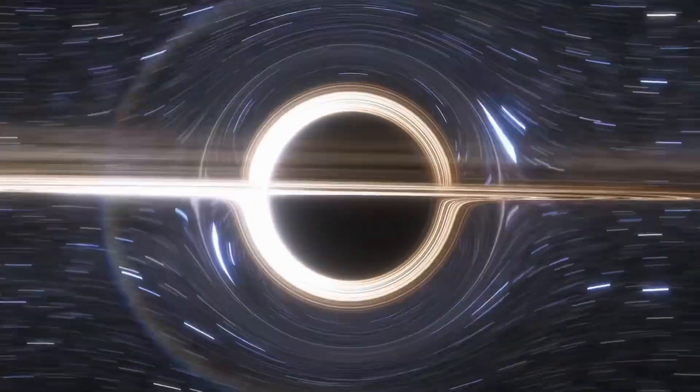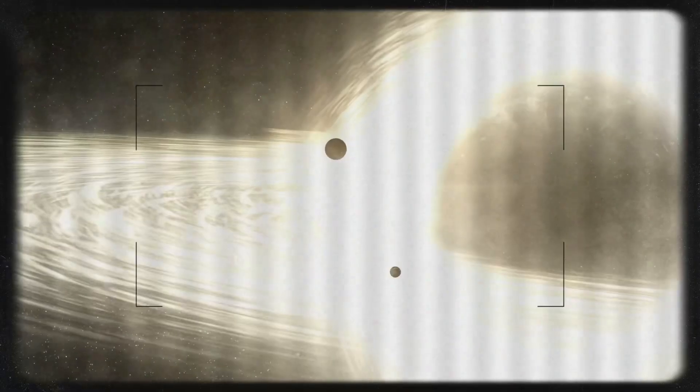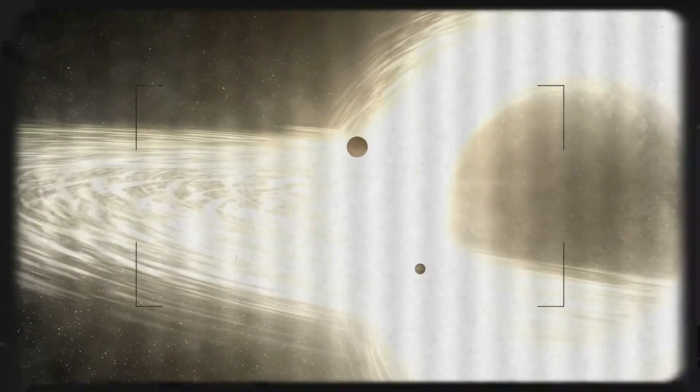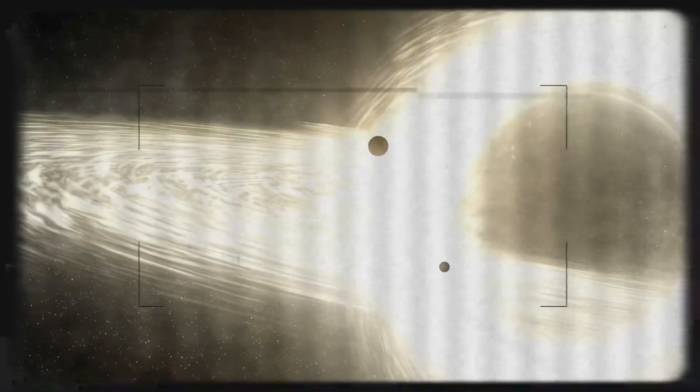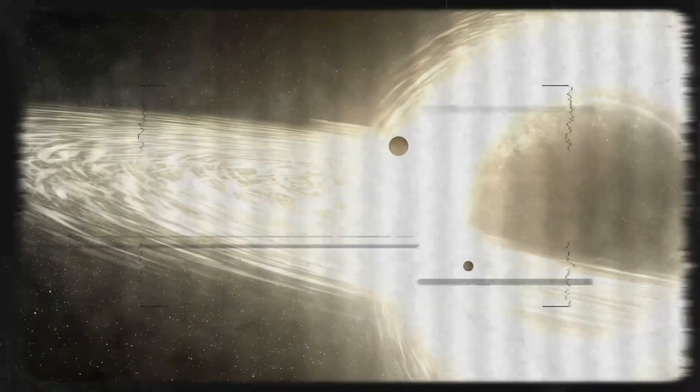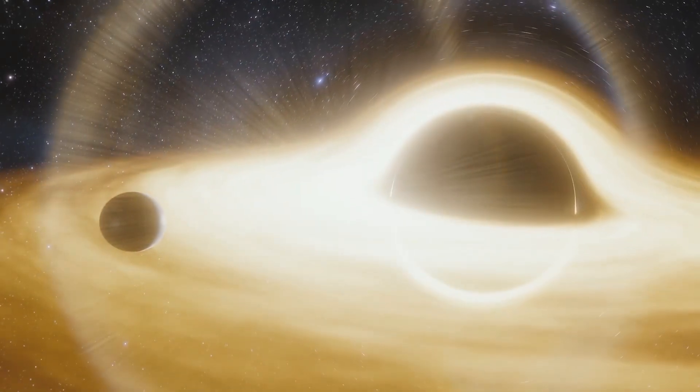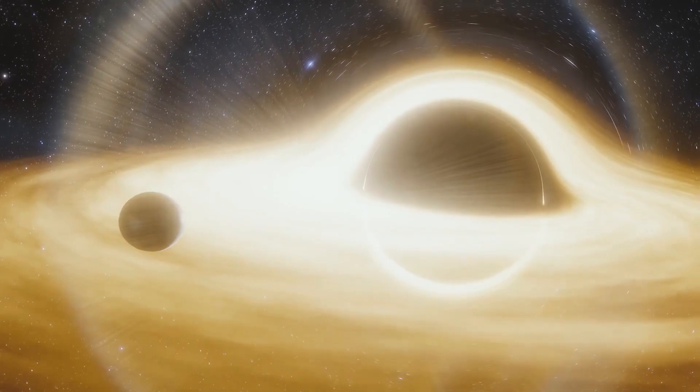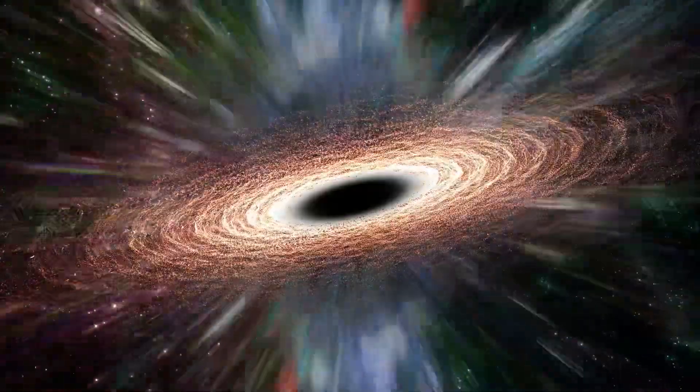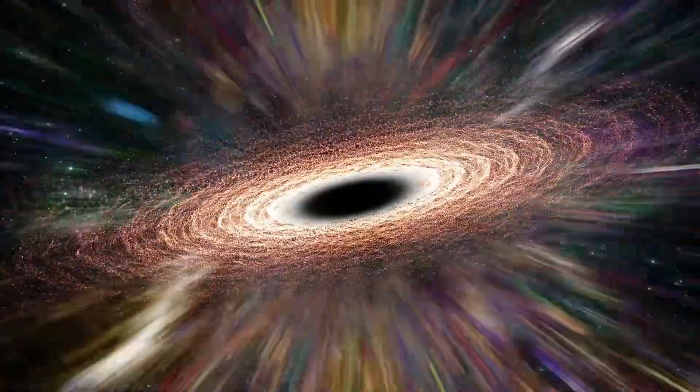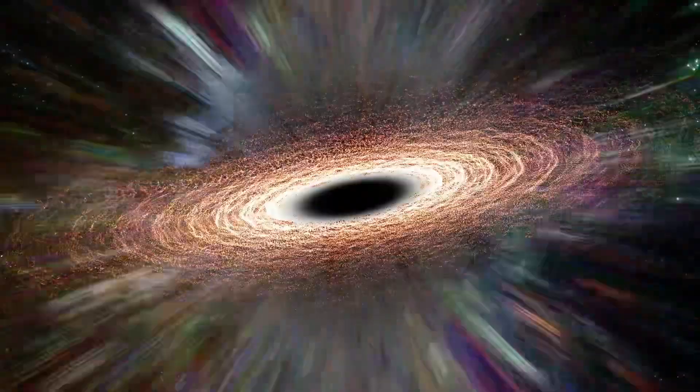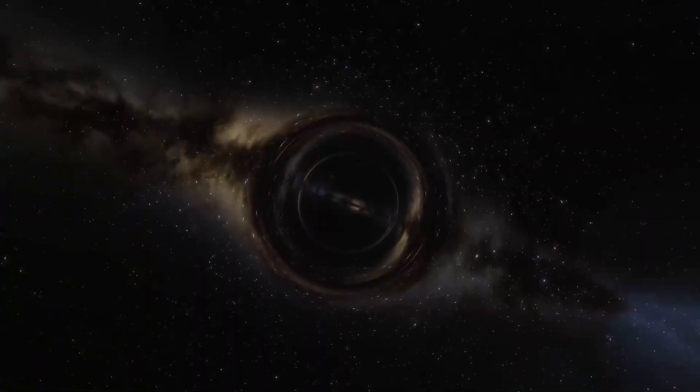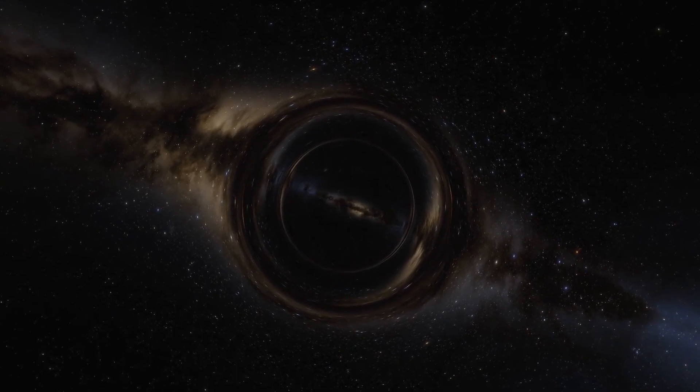Many of you might be familiar with black holes, but for those of you who don't know, a black hole is a region in space where the gravitational pull is so strong that nothing, not even light, can escape from it. Black holes are formed when a massive star collapses under its own gravity, condensing into an incredibly dense point called a singularity, surrounded by an event horizon, the boundary beyond which nothing can return.